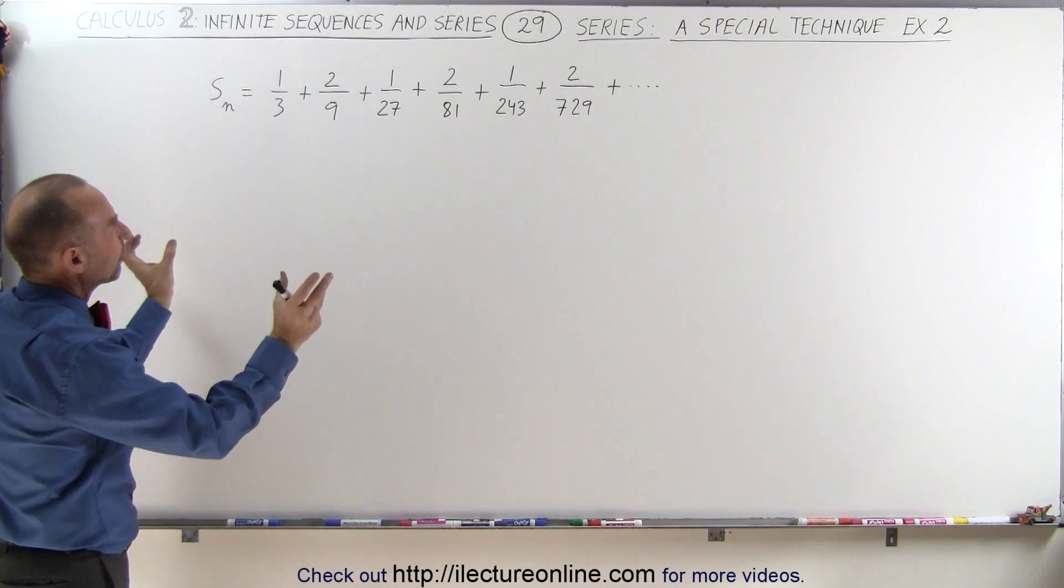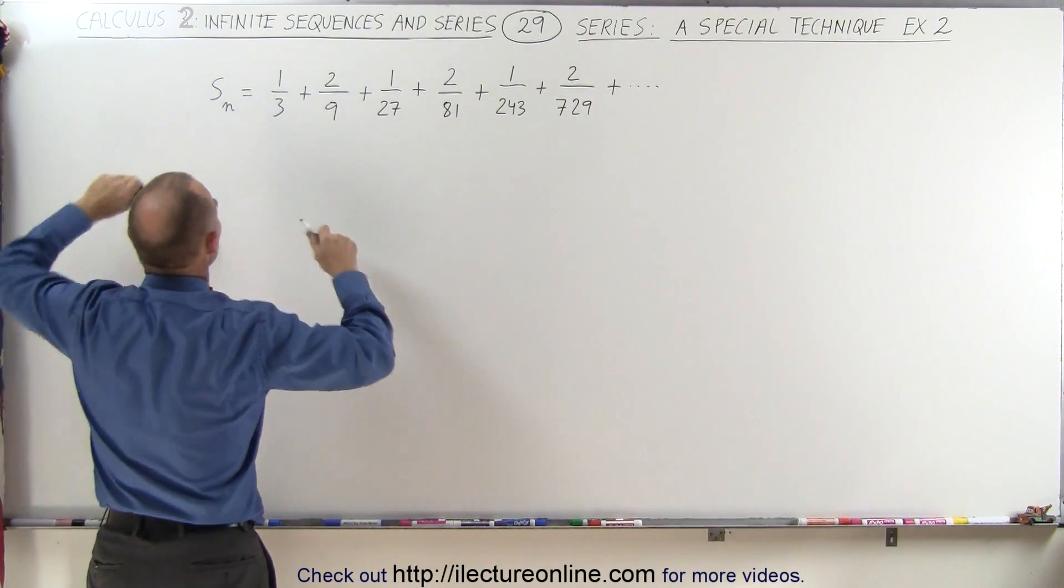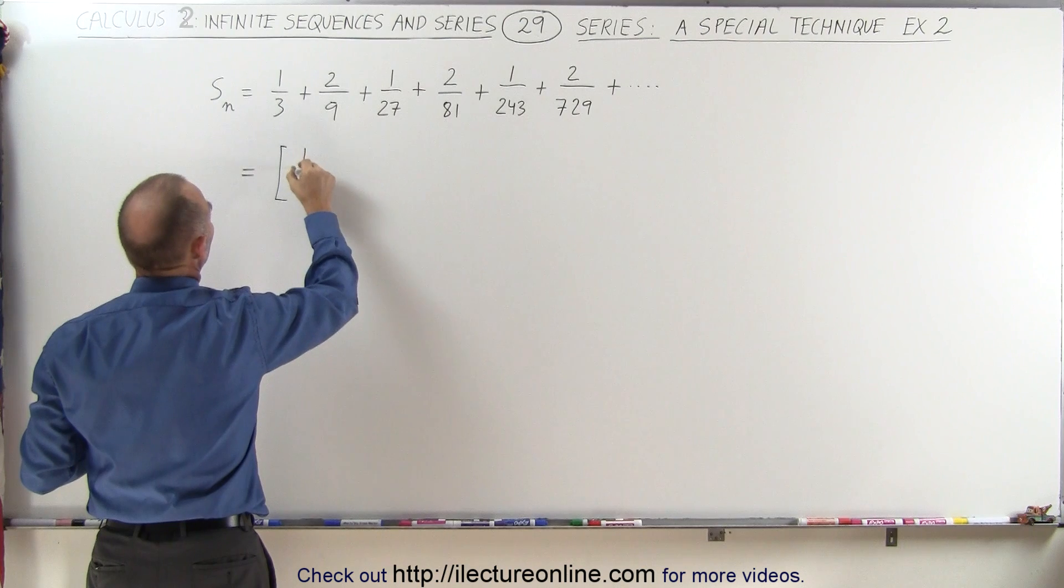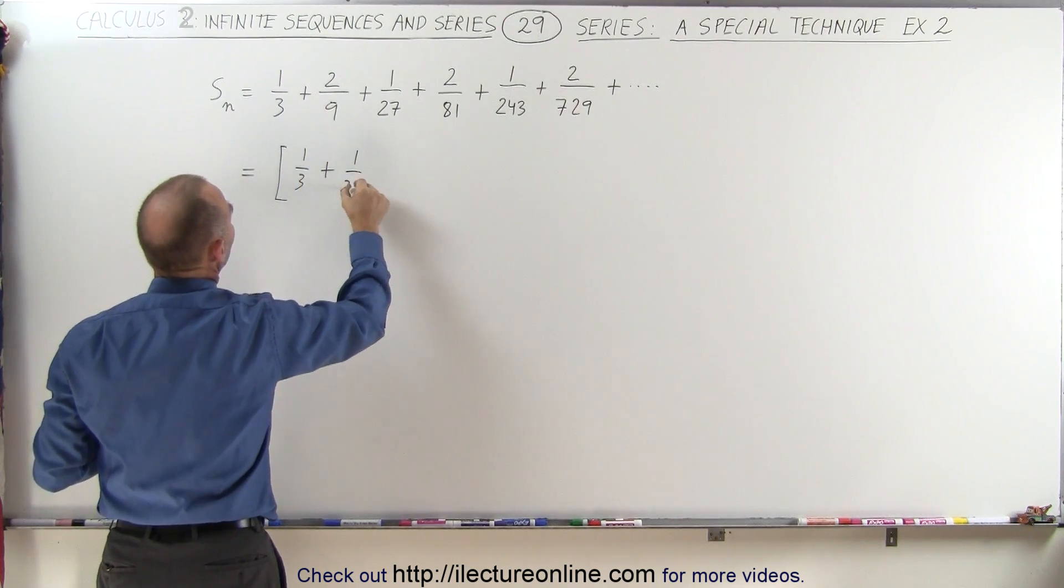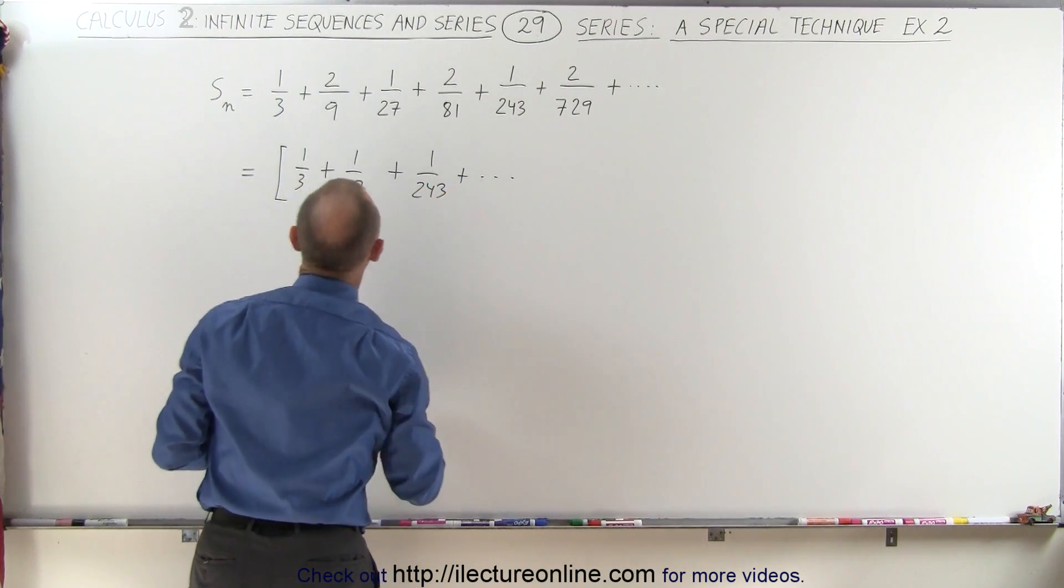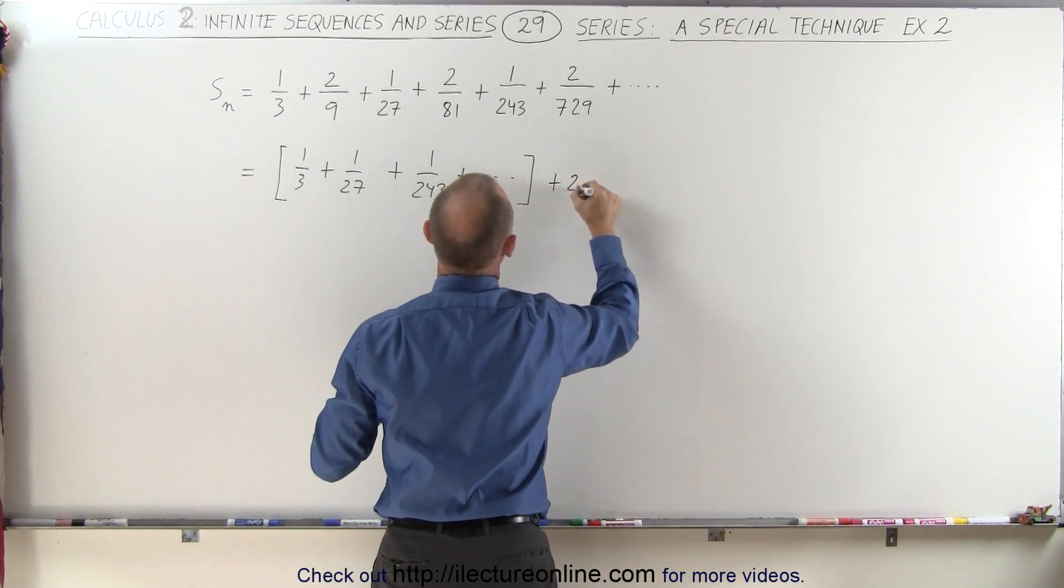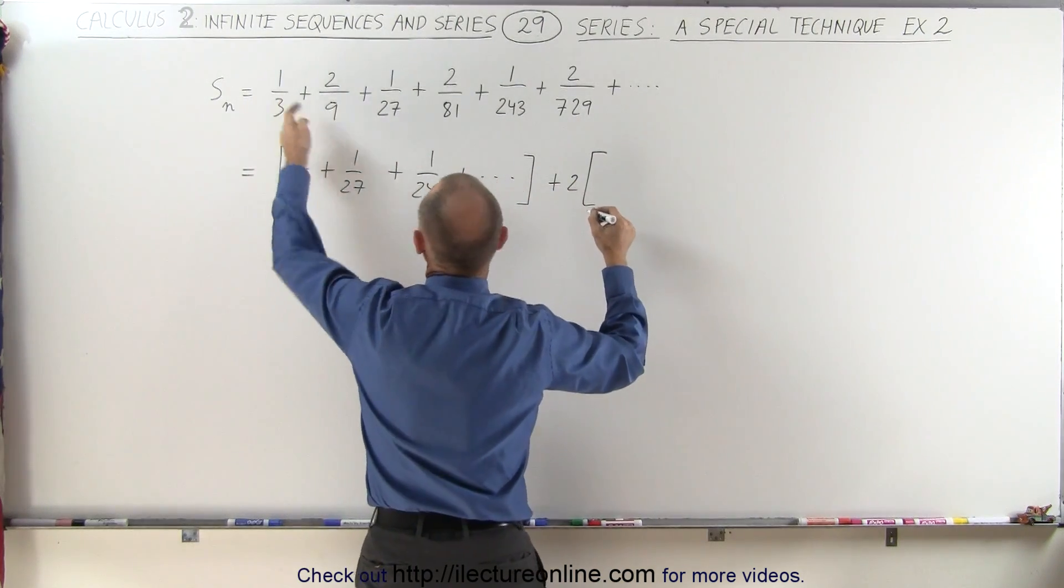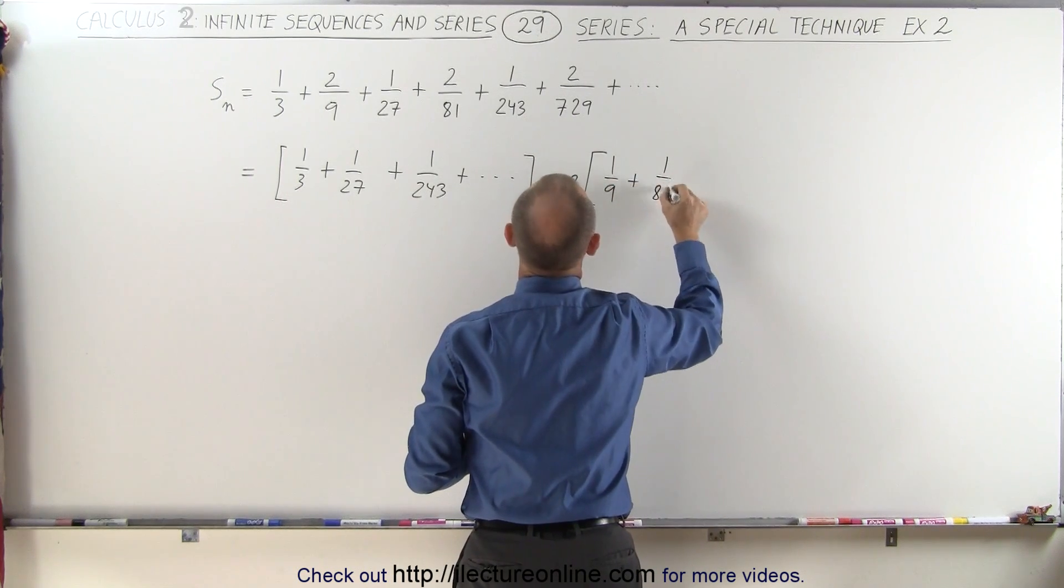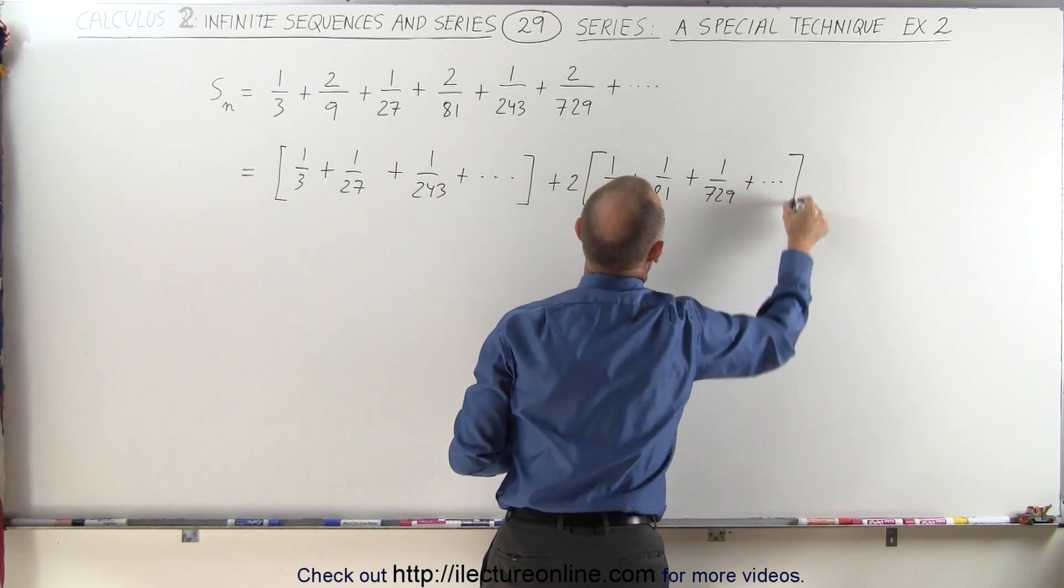So what we're going to do is break those up into the sum of two series. The first one is going to look like this: 1/3 + 1/27 + 1/243 + and so forth. And the second series is going to be plus 2 times—we'll factor out the numerator 2—and we'll get 1/9 + 1/81 + 1/729 + and so forth.